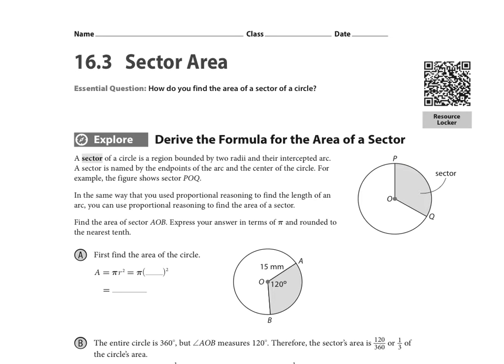We're going to derive the formula pretty much the same way. First, we're going to find the area of the circle here in part A. In this particular diagram, the radius is 15 millimeters, so it's going to be πr² or π times 15 squared.